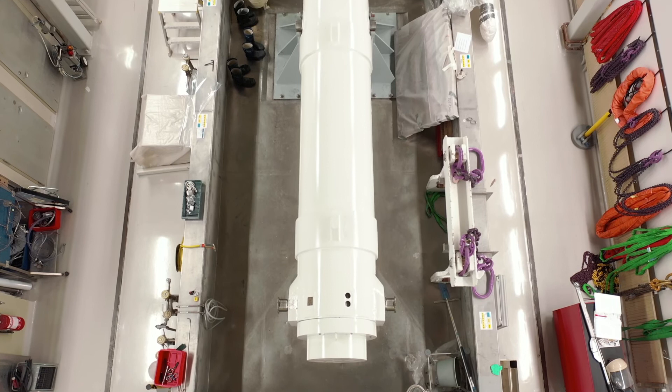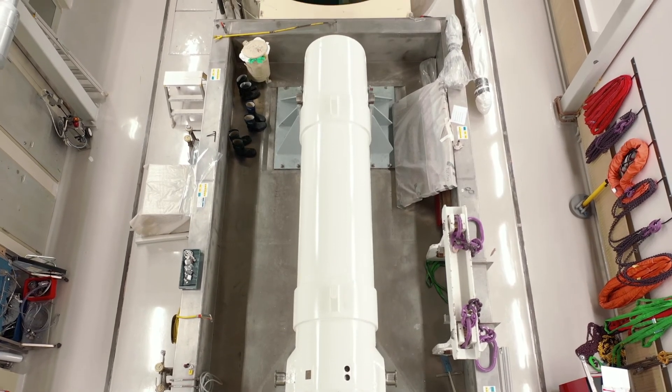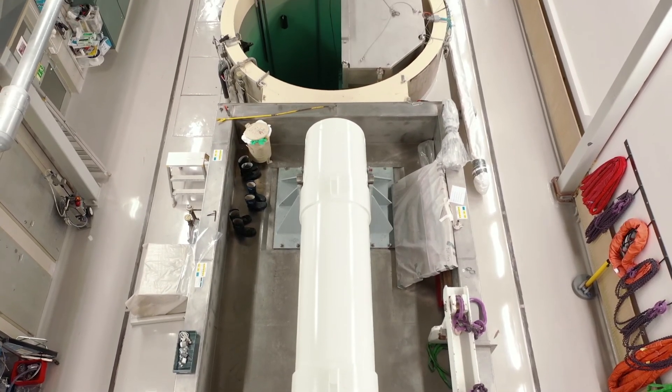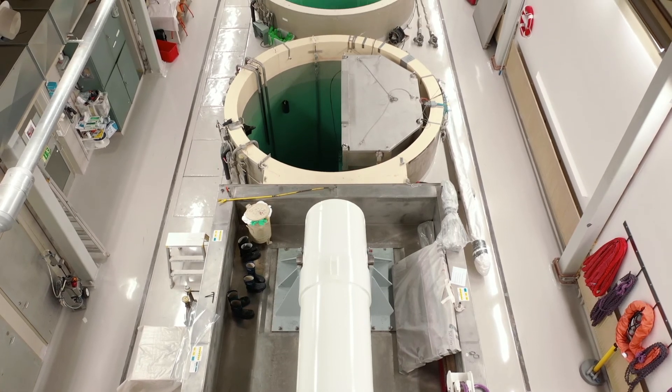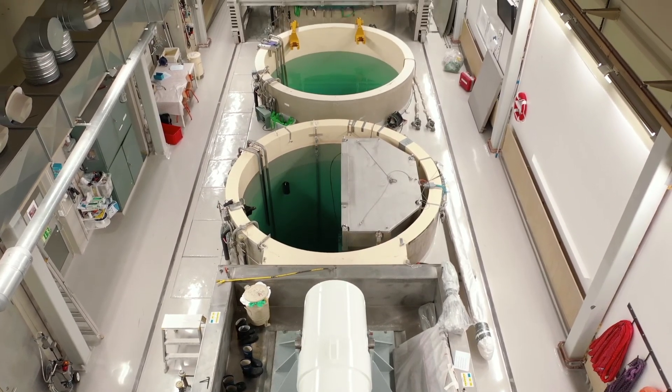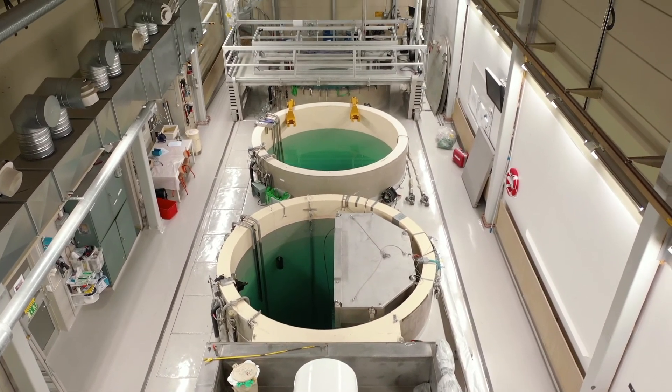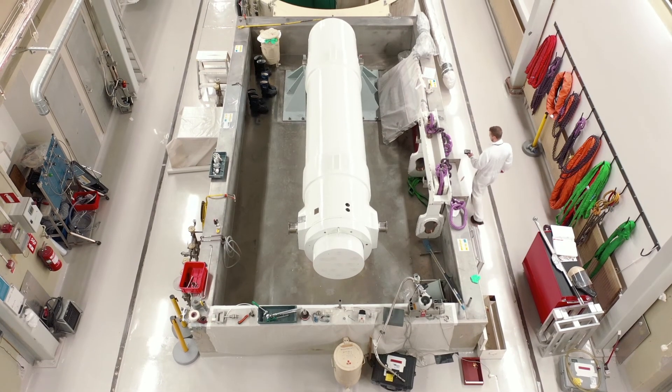Studsvik Nuclear also has a Type B transport cask for transport of fuels and highly irradiated materials. A number of other transport casks are also available. In this facility, the transport casks are loaded and unloaded underwater.